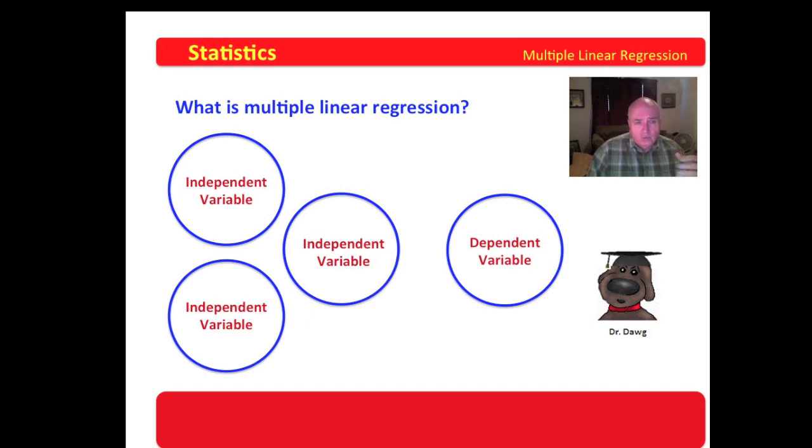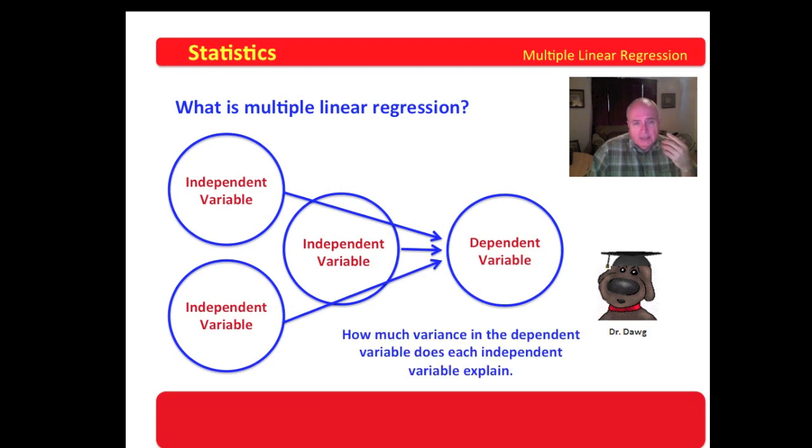So multiple linear regression will look for the independent variable that is having the most impact first. And, of course, the goal is that it will examine all three of those. And it will look at how much variance in the dependent variable that each independent variable explains.